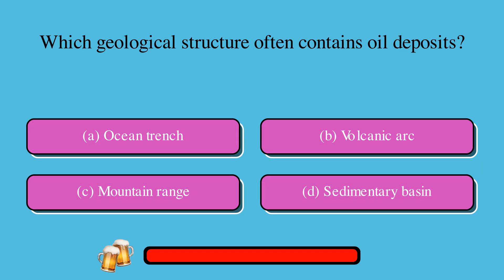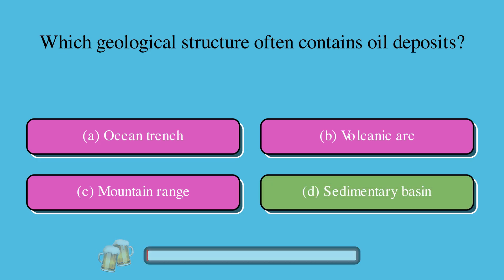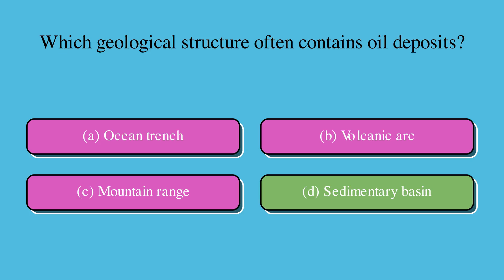Which geological structure often contains oil deposits? A. Ocean trench, or B. Volcanic arc, or C. Mountain range, or D. Sedimentary basin? The correct answer is D. Sedimentary basin.